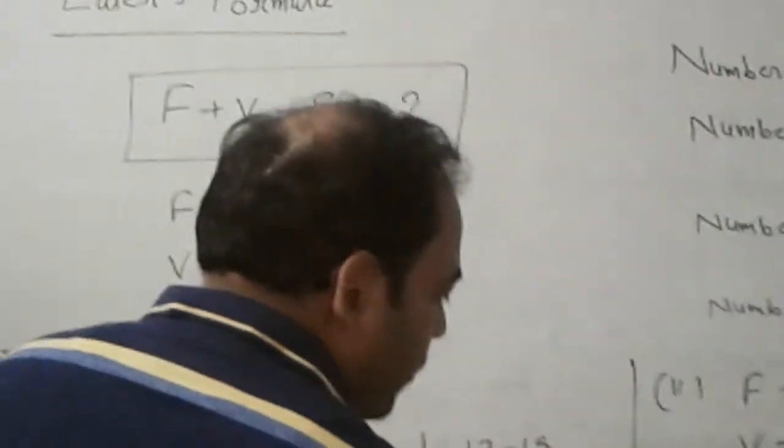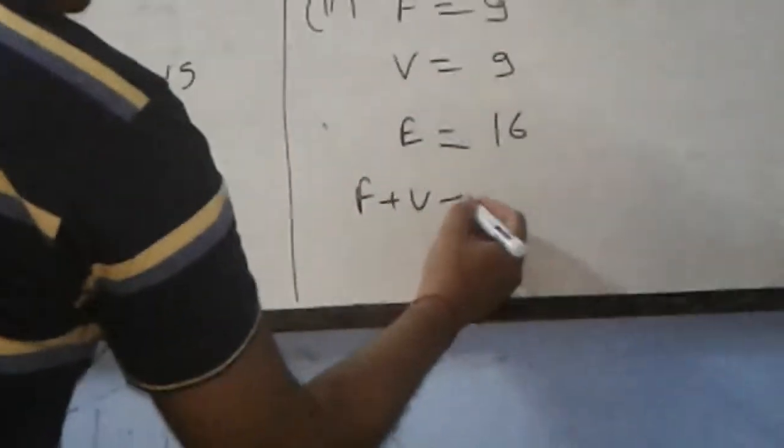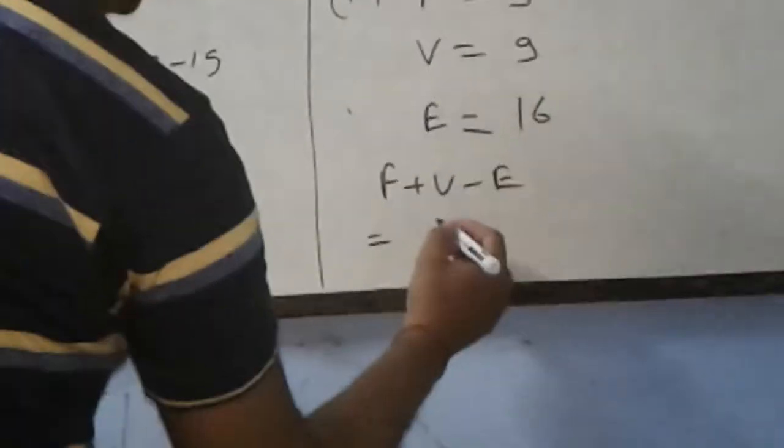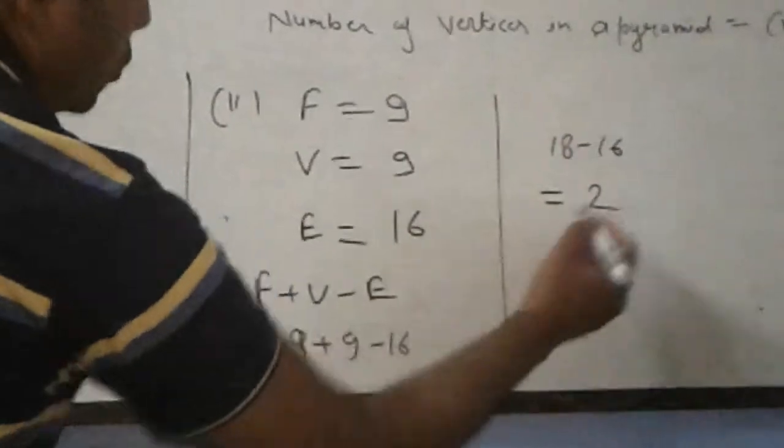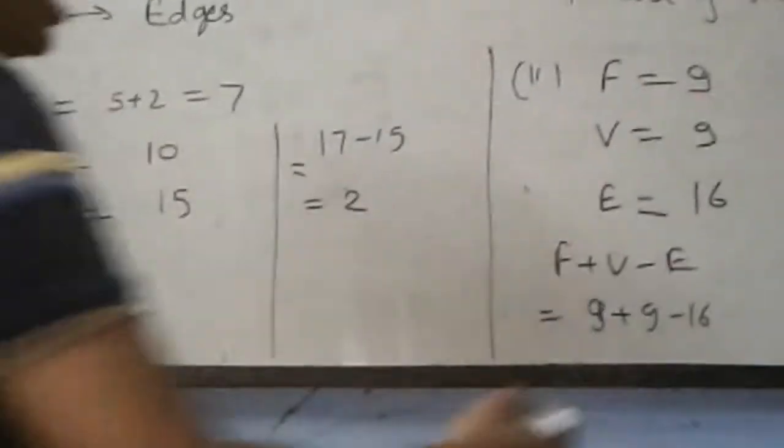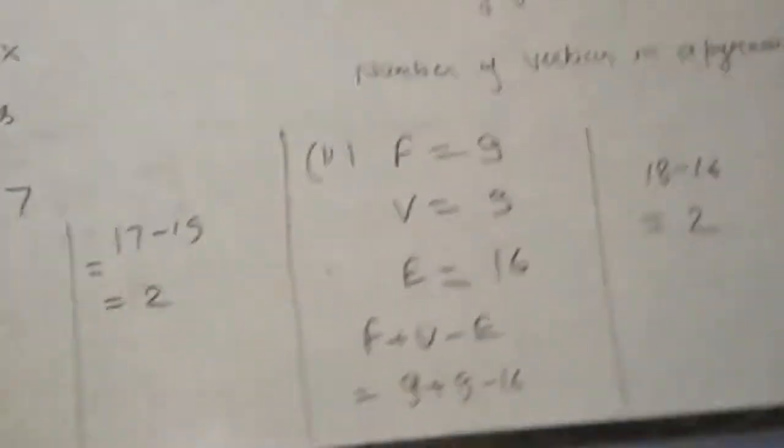Now apply Euler's formula. F plus V minus E is equal to 9 plus 9 minus 16. 18 minus 16 is equal to 2. It is also verified.